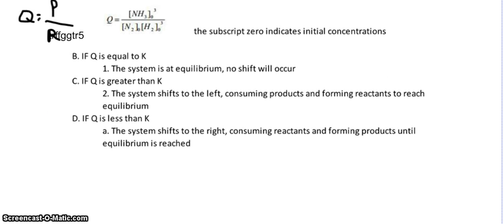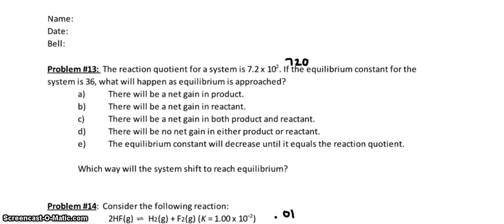Let's go to the next page. All right, so problem number 13. They are saying that a reaction quotient for the system is 7.2 times 10 to the second. That's 720. So if the equilibrium constant for the system is 36, what's going to happen as the equilibrium is approached? So keep in mind, Q is bigger than K. Q has to get smaller so that we'll reach the K value. So how is that going to happen? Pause your computer. Okay, so what did you say? So if Q has to get smaller, you're going to have to shift to the left and favor the reactants. If Q equals products over reactants, how am I going to make this number get smaller? P has to get smaller, R has to get bigger, and that's letter B, shift to the left.